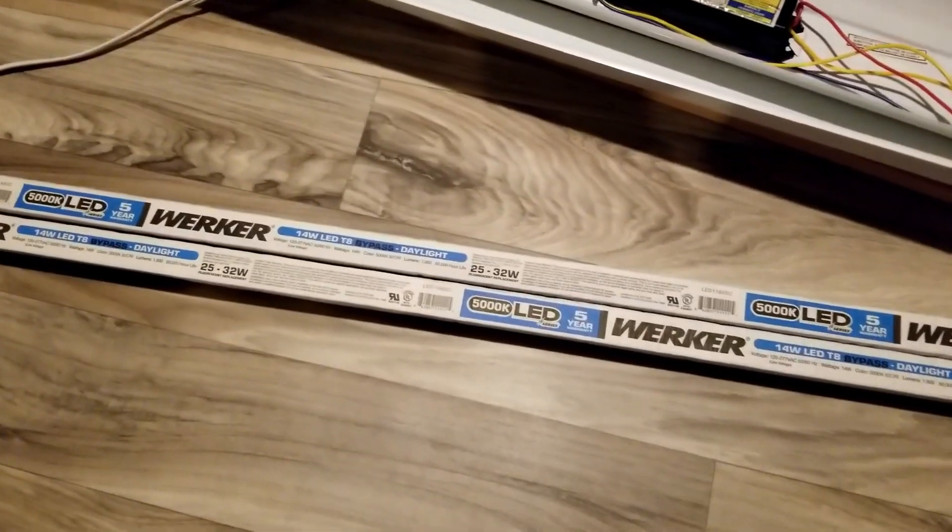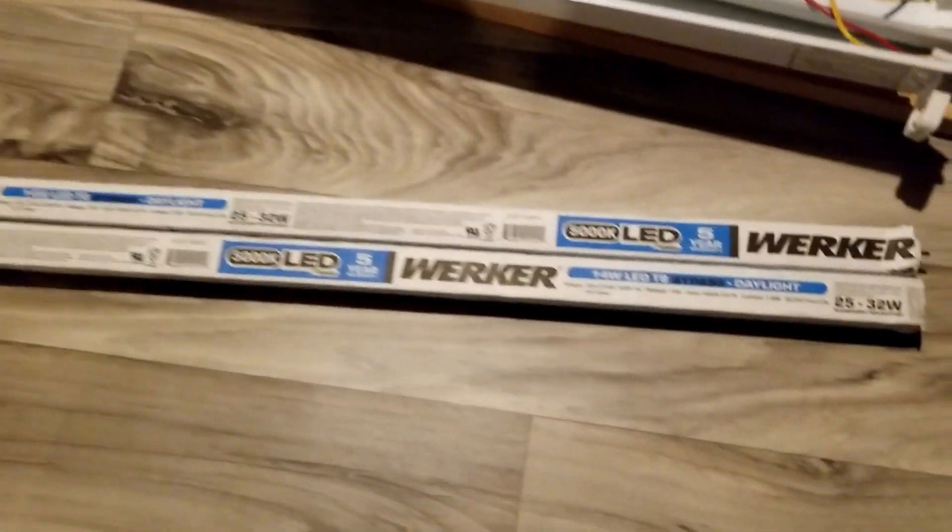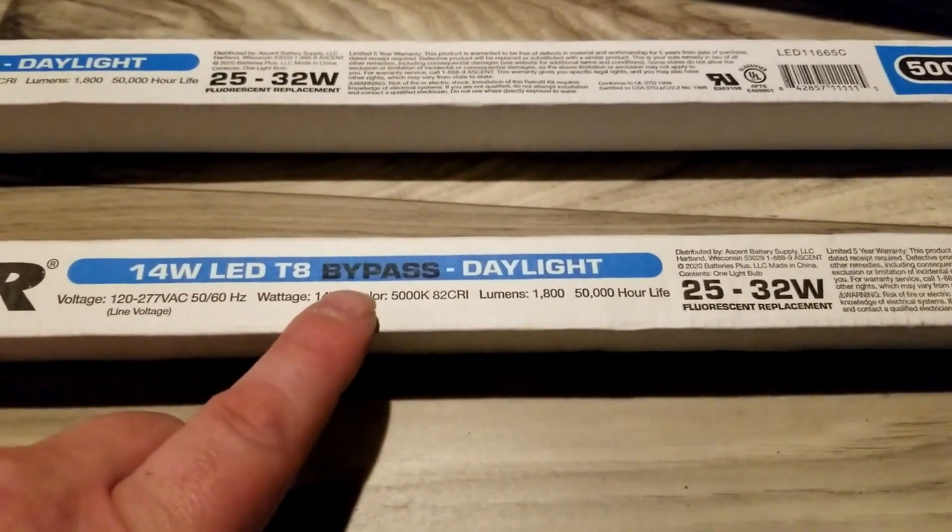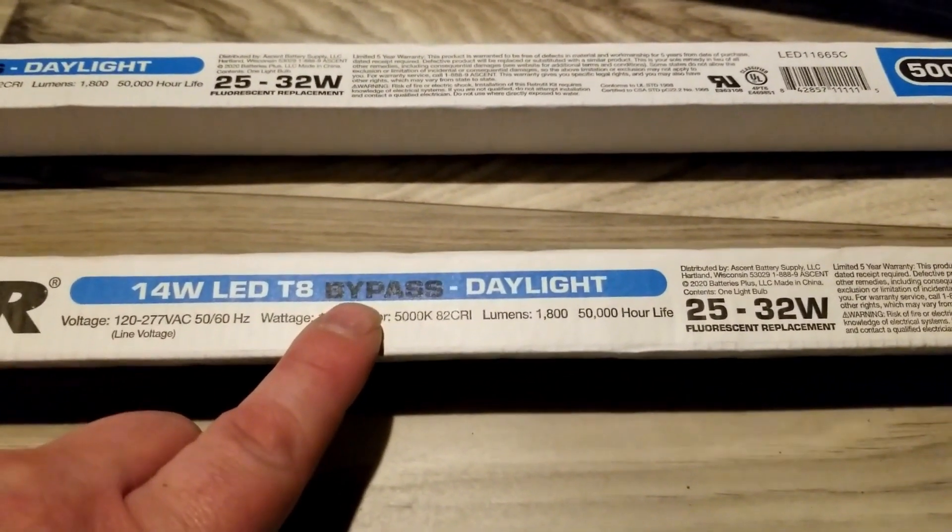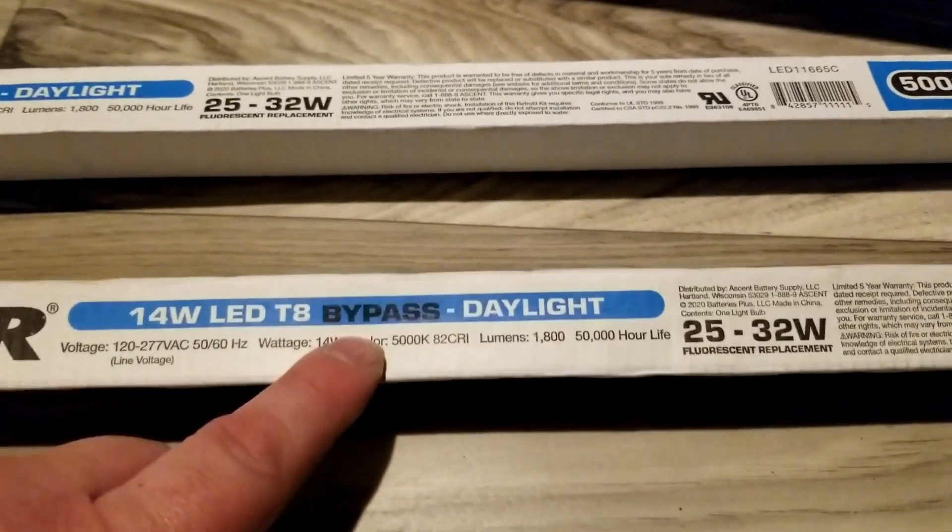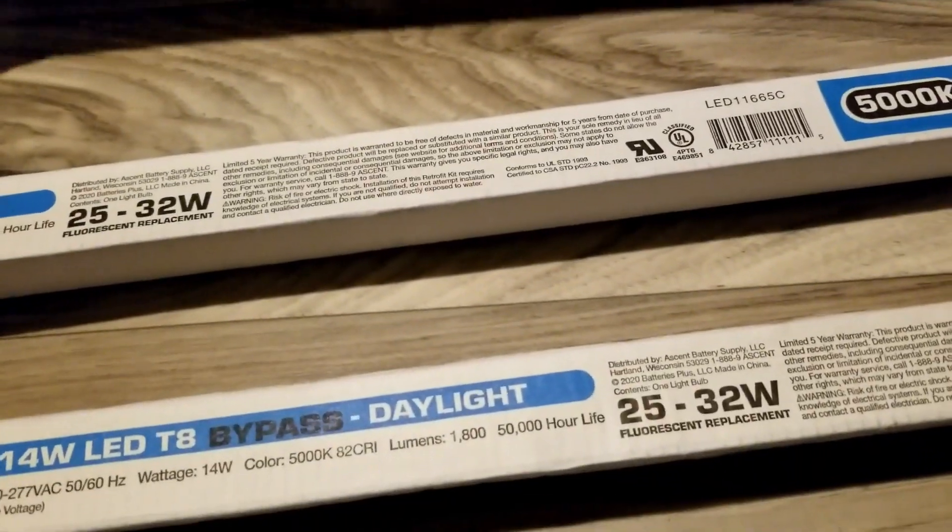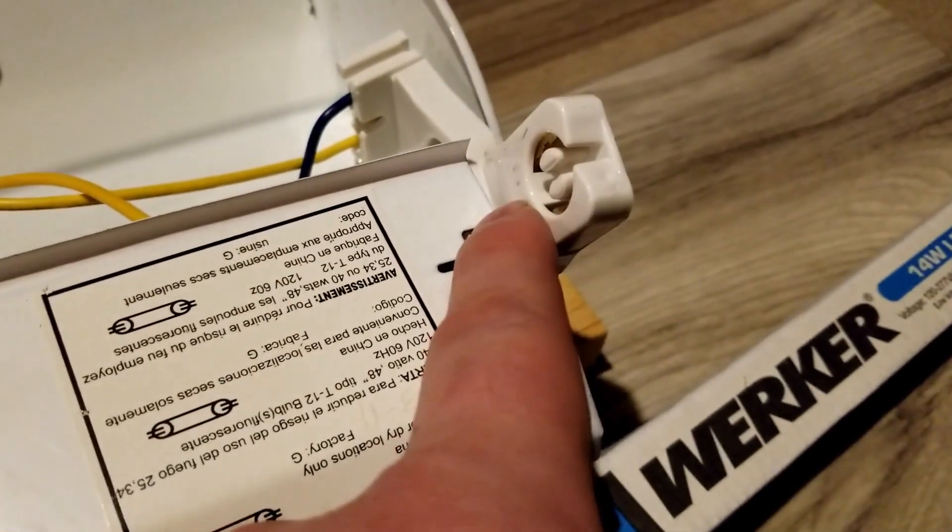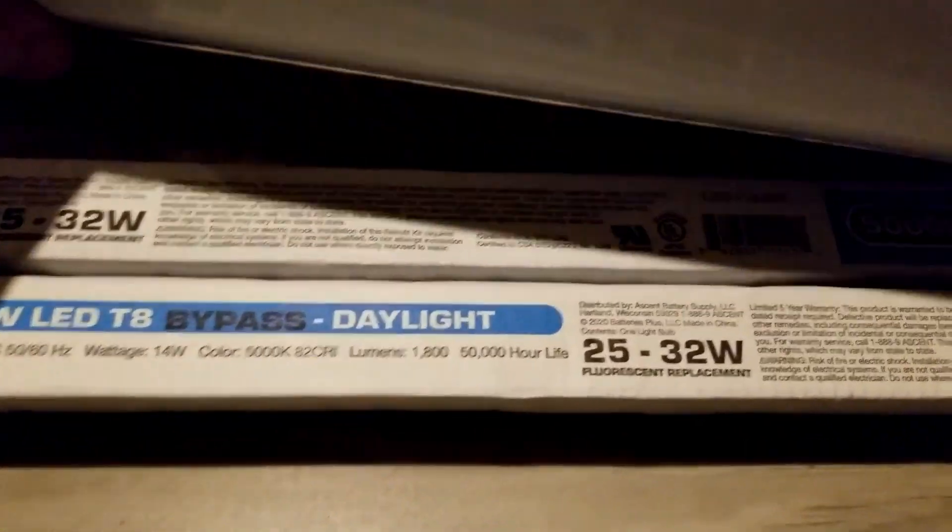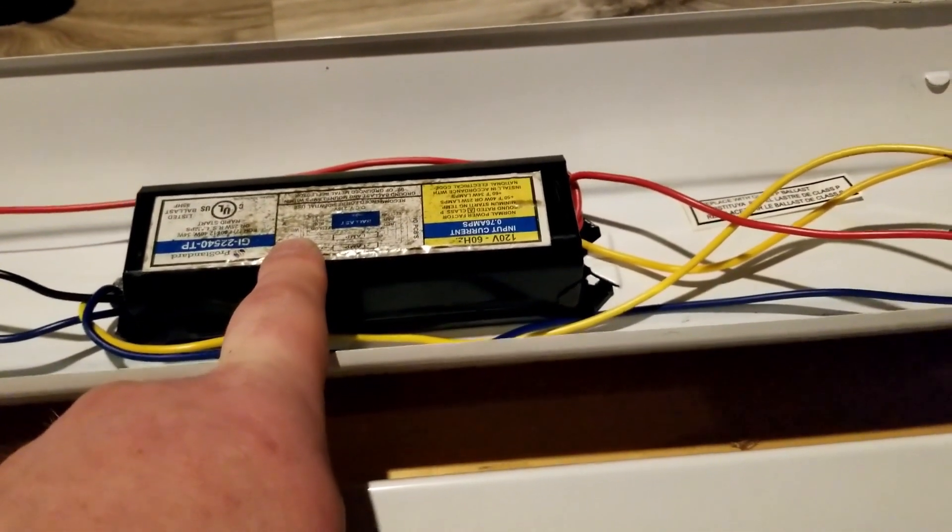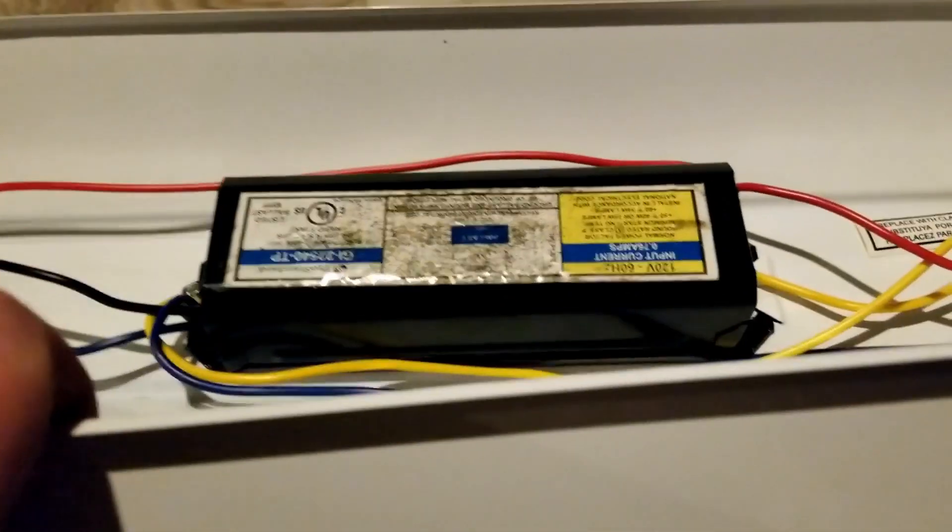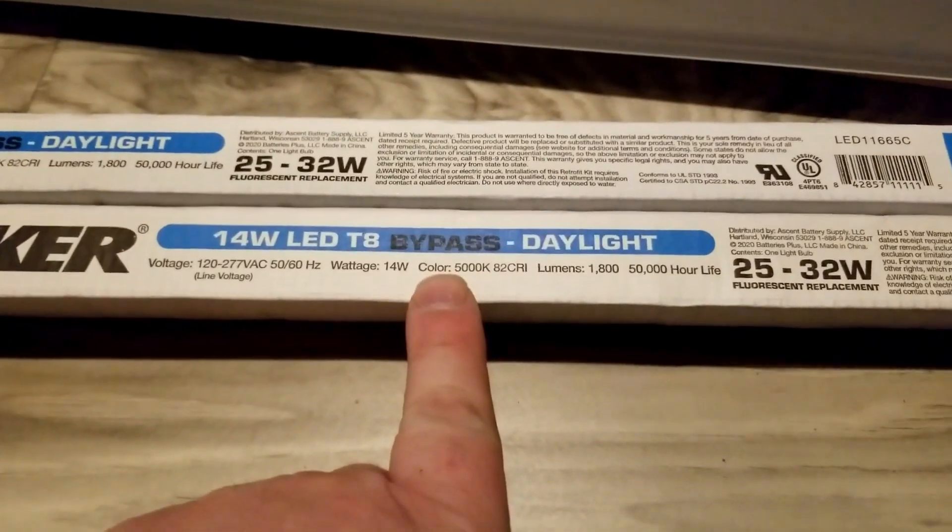So run up to the old batteries and bulb store and get some LEDs. There are two types of LEDs out there. The big thing to note is whether it says direct fit or bypass. A direct fit means you just take your fluorescent bulb out, twist in the LED on these little posts, and you're done. It's a direct fit - it still uses the same ballast. Then you've converted to LED lights.